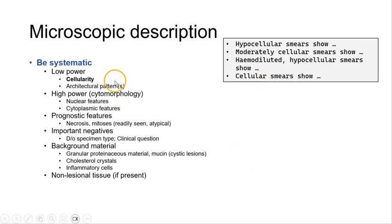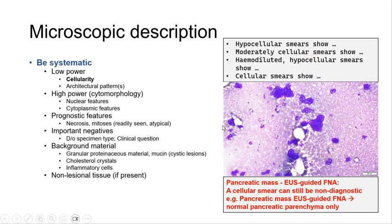Here is an example of how cellularity can be very concisely reflected — for example, hypocellular smears, or moderately cellular, haemodiluted hypocellular smears, etc. I want to highlight that in some contexts, smears can be highly cellular and still non-diagnostic. For example, here we have an EUS-guided FNA of a pancreatic mass, and although the smear is very cellular, this actually only shows normal pancreatic parenchyma, and if this is the only finding, the sample is actually non-diagnostic.